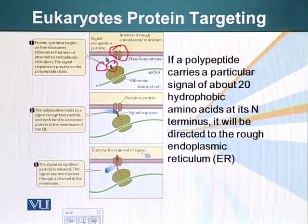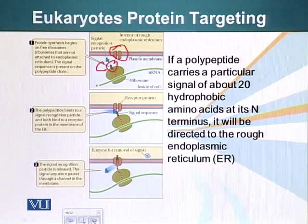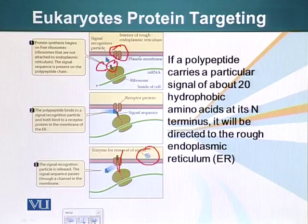The signal recognition particle takes them to a special pore on the surface of the ER. This pore is made by a special protein, and on this protein the ribosome docks and resumes the protein synthesis procedure. The protein is now injected into the lumen of the ER. There are special enzymes inside the ER that can recognize that special signal sequence, and they will cleave it off when the protein is injected into the ER.